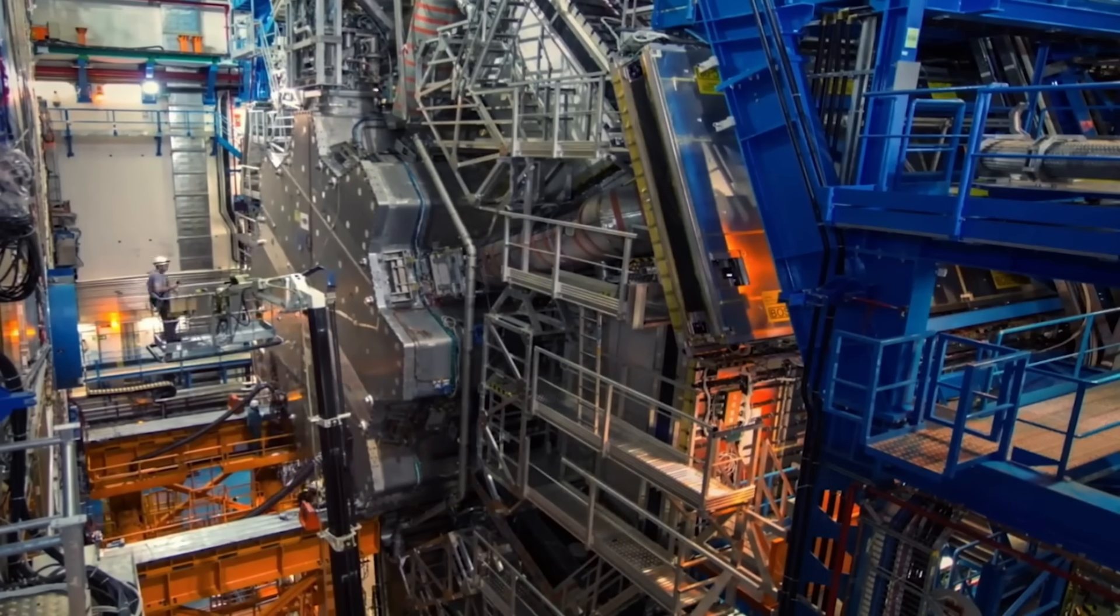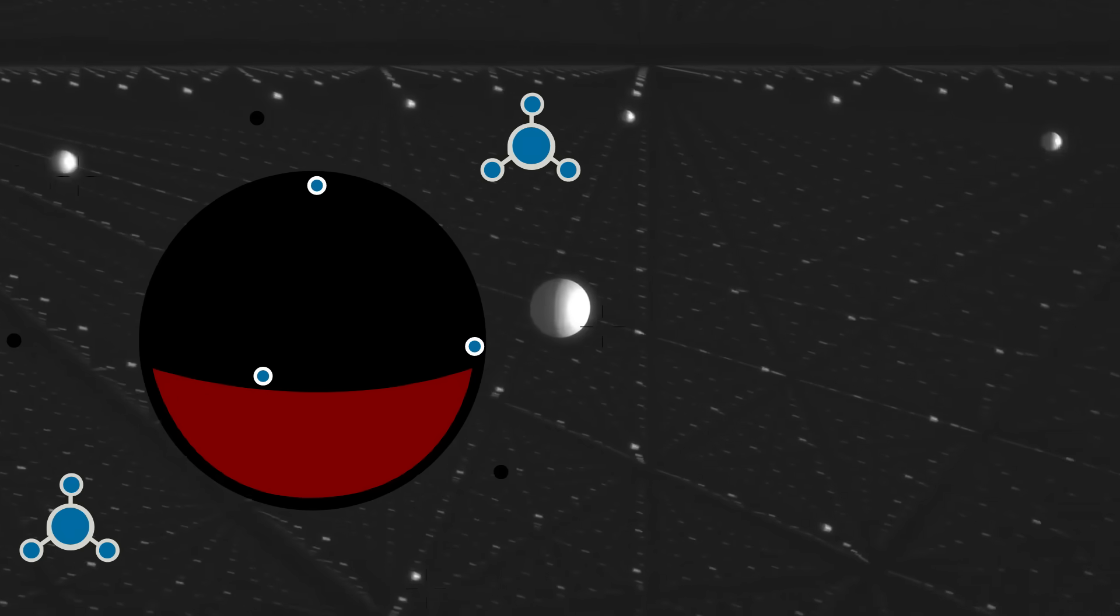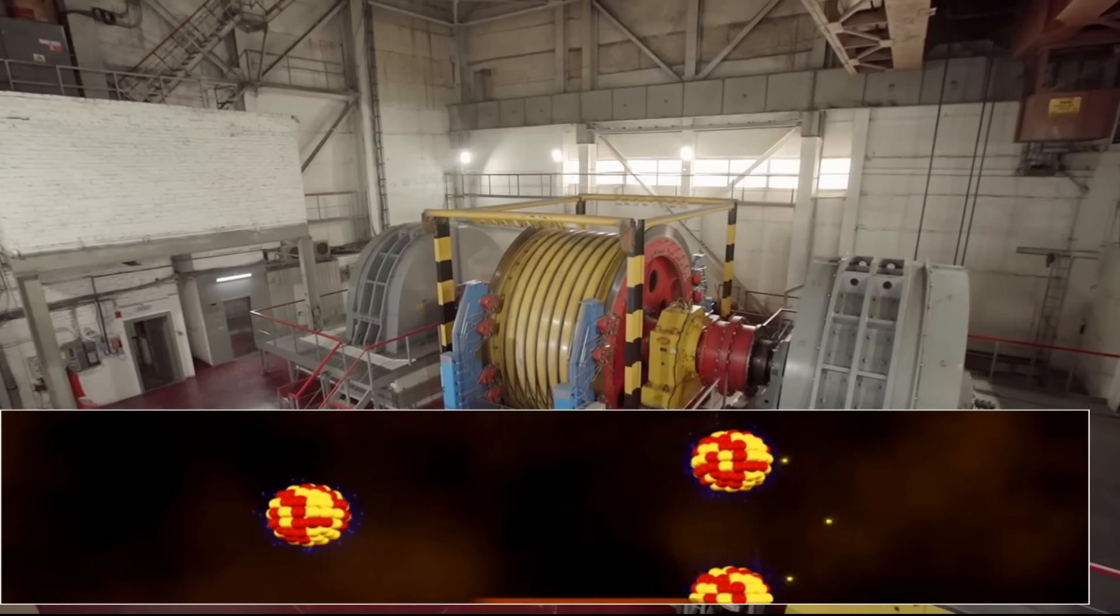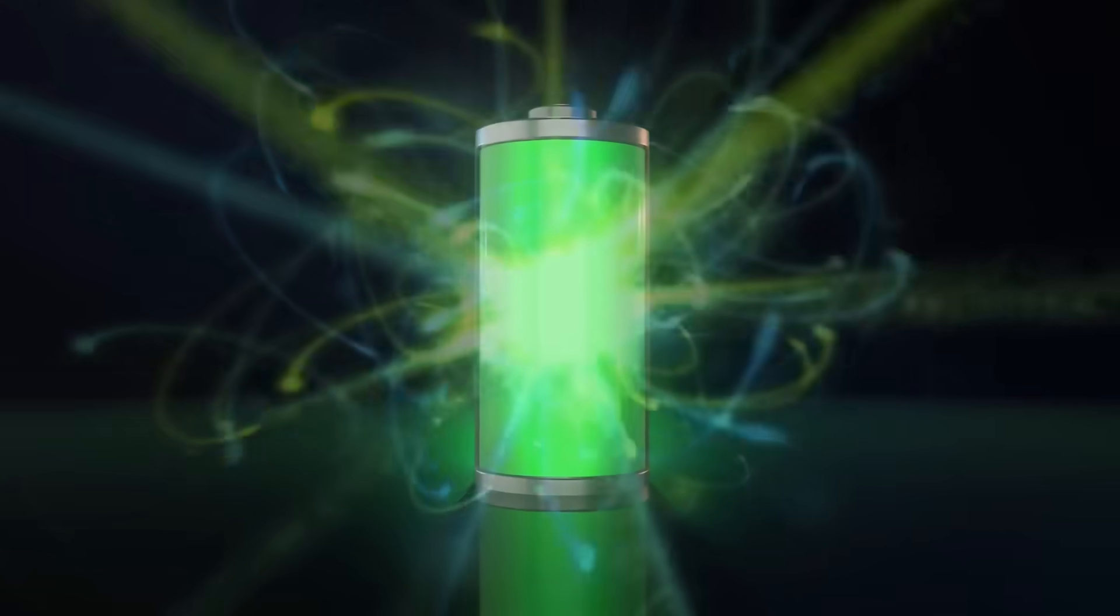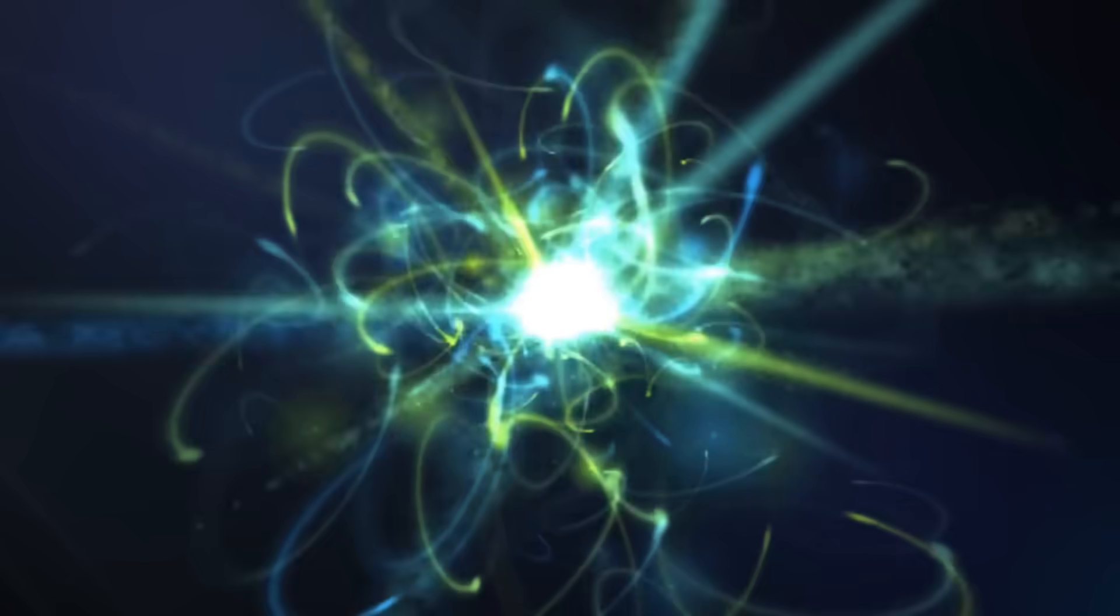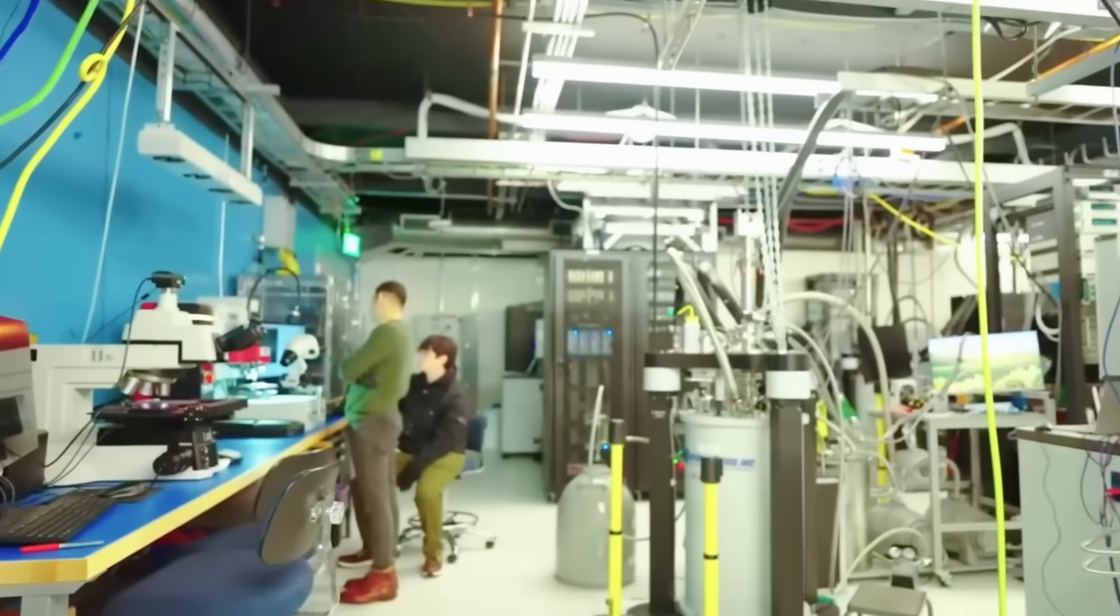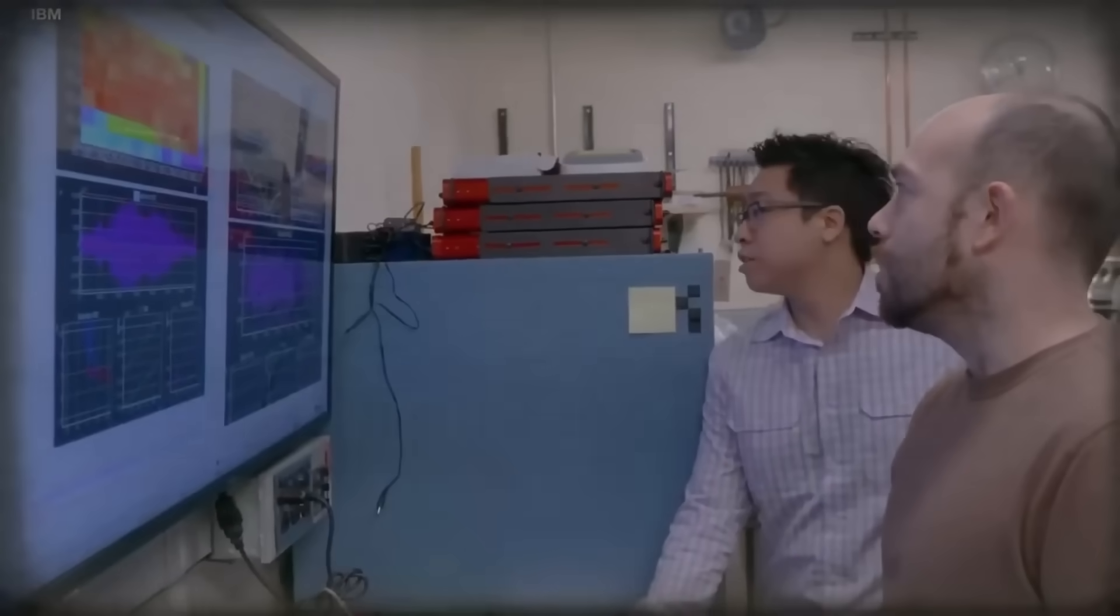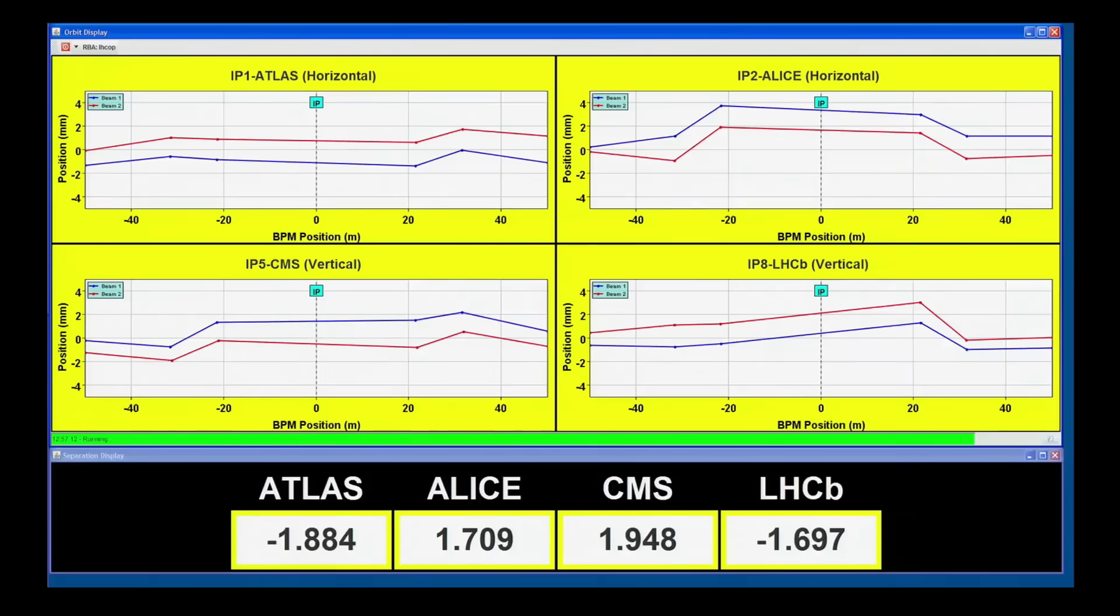The quantum tunneling effect itself is a phenomenon where particles can pass through energy barriers that, according to classical physics, they shouldn't have enough energy to overcome. It's like a ball rolling up a hill but not having enough energy to reach the top, yet somehow appearing on the other side anyway. The key innovation in the CERN experiment was the development of coherence preservation fields—precisely calibrated electromagnetic fields that shield the particles from external decoherence effects that normally collapse quantum states. To measure the results, the team used an array of specialized detectors positioned around the chamber, including superconducting quantum interference devices (SQUIDs) that can detect extremely subtle magnetic field changes. The statistical analysis required to confirm the findings was immensely complex.